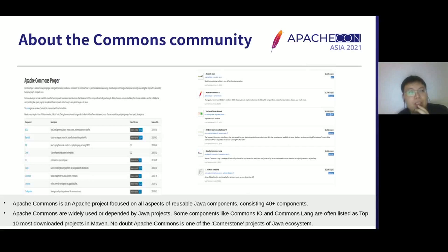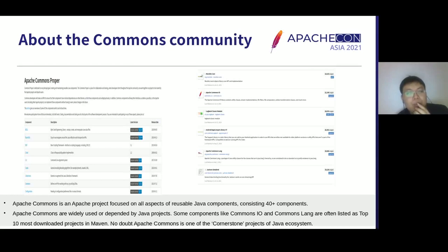Apache Commons community has lasted over 20 years and is a long-established project. The former name was Jakarta Commons. Apache Commons is now an Apache project focused on all aspects of reusable Java components, consisting of over 40 components. The name Apache Commons may be new to most developers, but if you are a Java developer, you have likely used Apache Commons in some way.